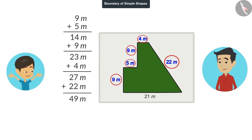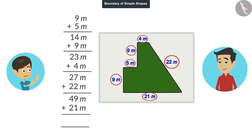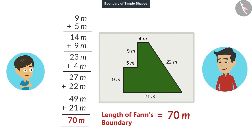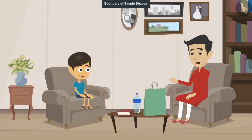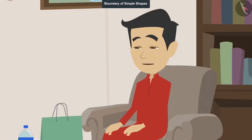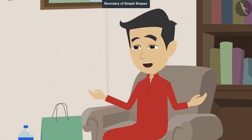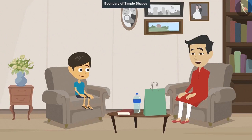Okay. If we add 21 meters to 49, the answer will be 70 meters. That means the length of our farm's boundary is 70 meters. You are right, Rayansh. Now you have learned how to calculate the length of the boundary. Now you can help those people in the village who do not know how to measure the length of the boundary.